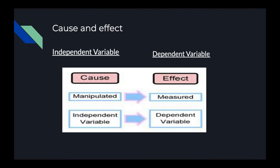I have operationalized my independent variable by creating two light level conditions: a bright light class and a dull light class. I am looking at the effect of that on attention by students. I am operationalizing attention through a test — the teacher taught a topic in class while light levels were manipulated, and afterwards students were given a test to see how much attention they paid in class.